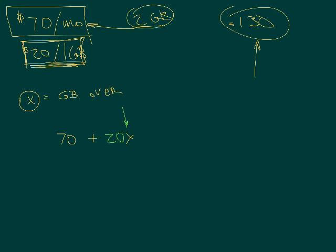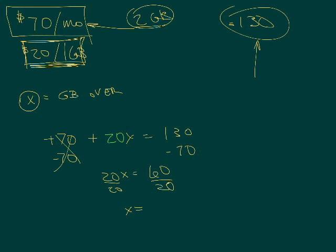So we're going to call that 20 times x, because we don't know how many we use, but we do know it's going to cost me $20 for every one, and that would give me my total bill right there. So there's my equation. So I'm going to subtract 70 from both sides. So that goes away. So I have 20x equals 130 minus 70 is 60, divide by 20, divide by 20, and x equals 60 divided by 20 is 3.